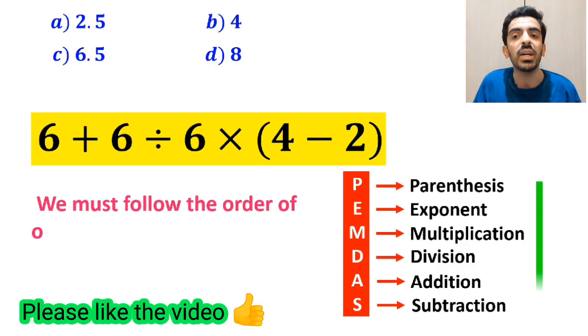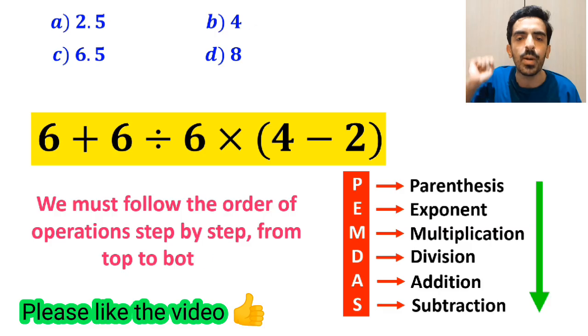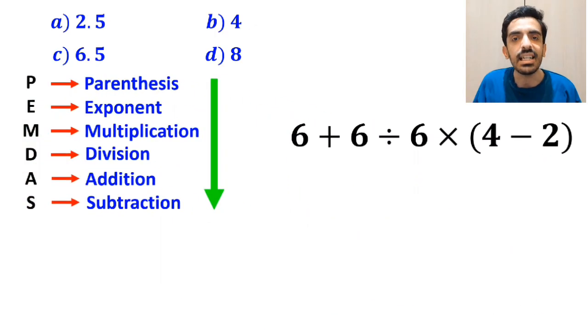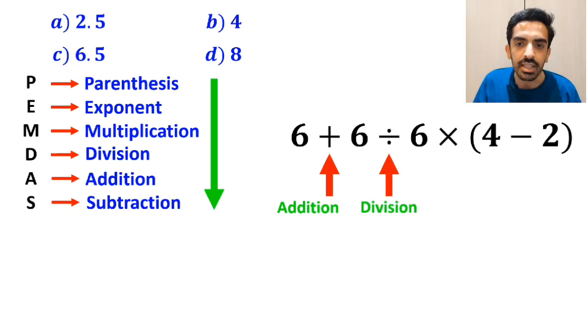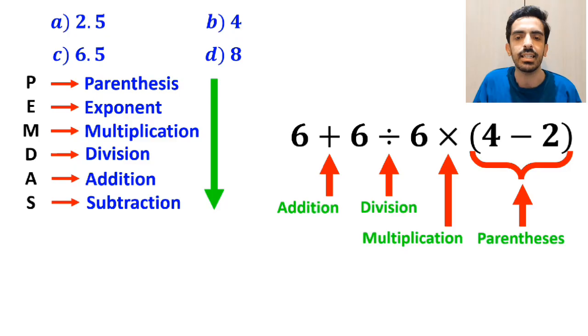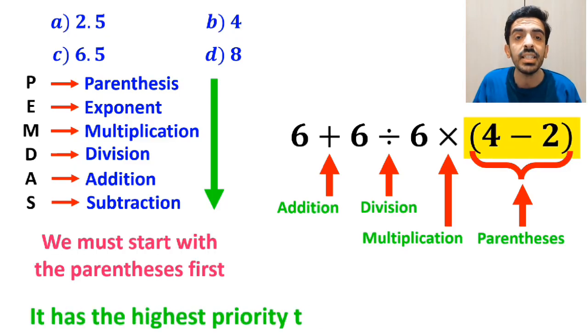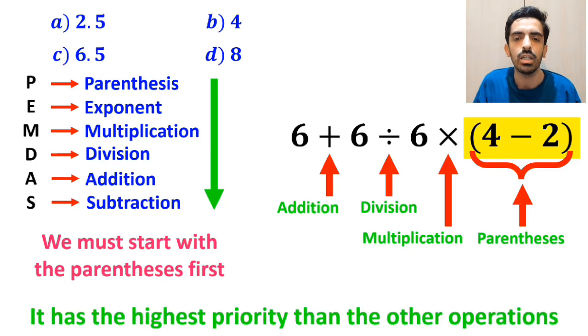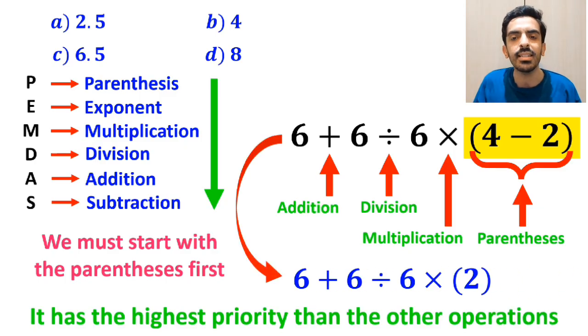We must follow the order of operations step by step from top to bottom. As you can see in the image, in this expression, first we have an addition sign, then a division sign, followed by a multiplication, and finally parentheses. We must start with the parentheses first because it has the highest priority than the other operations. So, instead of this expression, we can write 6 plus 6 divided by 6 times 2.